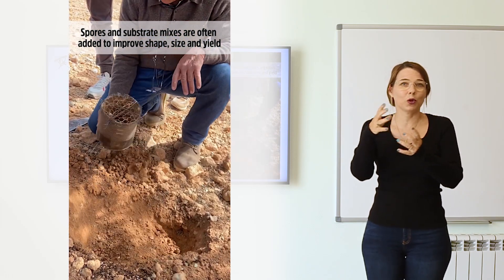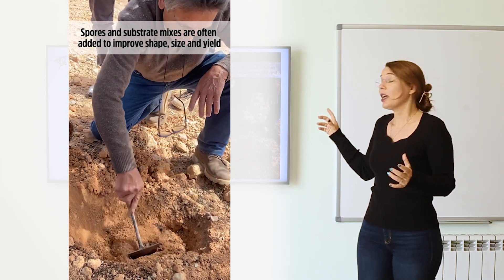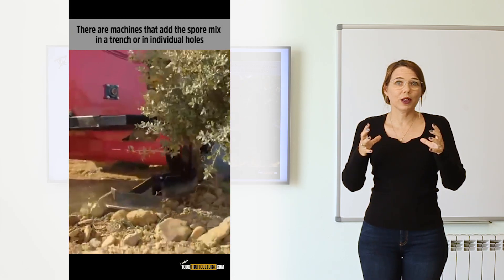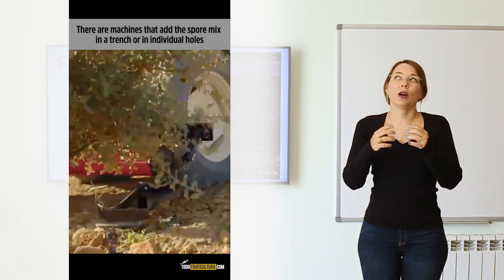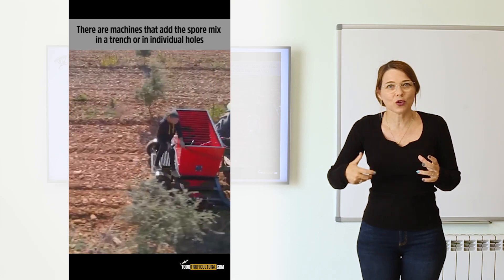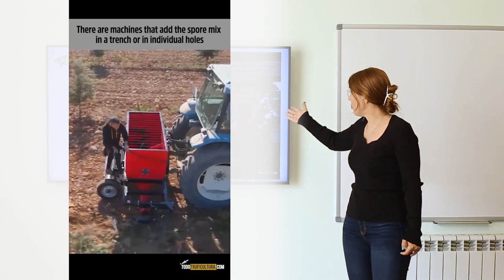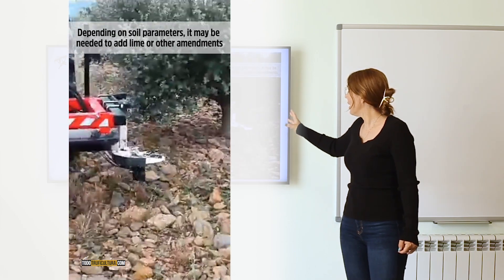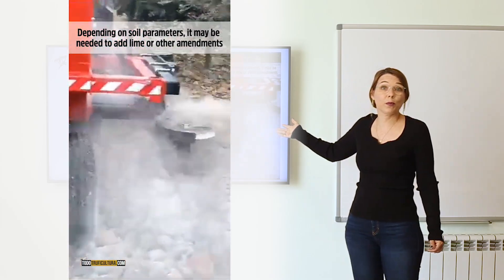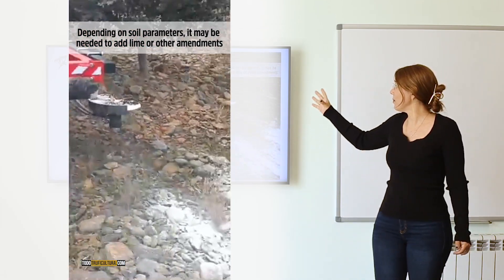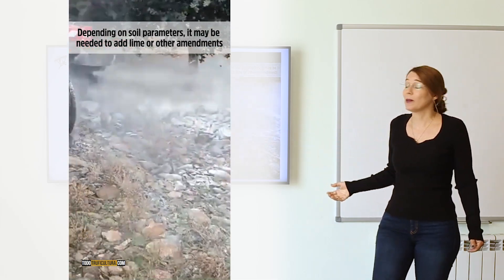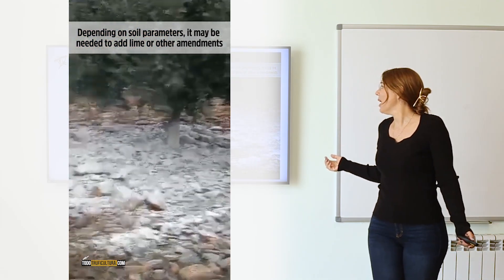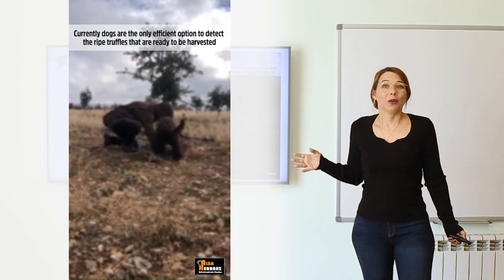Another thing we do — we call them nests or Spanish wells — is put substrate on the ground, like peat moss used in potting mix, with spores, to make sure the truffle finds a medium that holds water and also seeds the ground to encourage new truffle formation. We have specialized machinery designed for this. Sometimes we also have to do amendments to keep raising the pH, and we have tools for that too — including one I helped design after a bad soil analysis from a client.